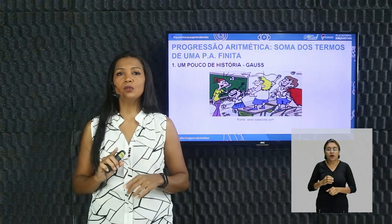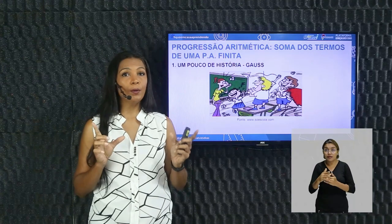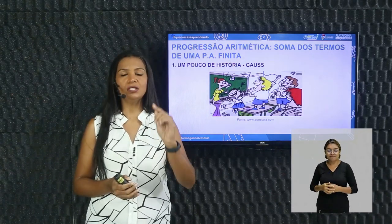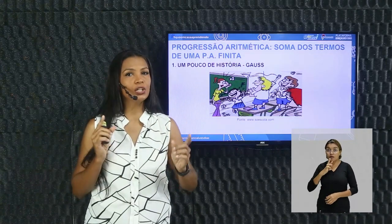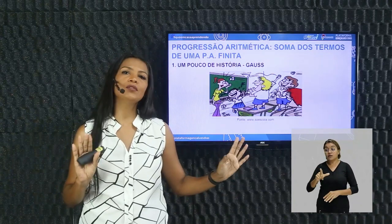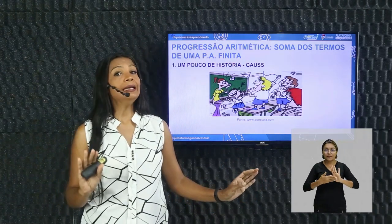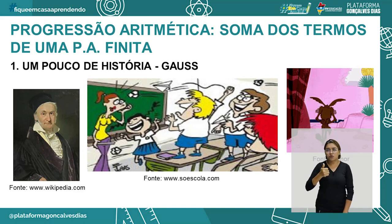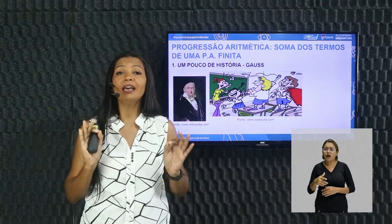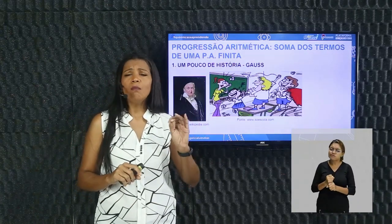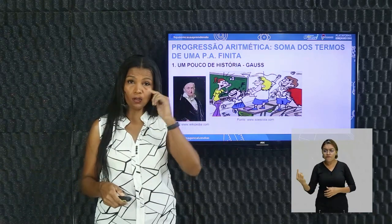O professor disse: se vocês conseguirem dizer qual é a resposta da soma de todos os números de 1 a 100, podem continuar na brincadeira; caso contrário, têm que fazer silêncio. Lá naquela sala havia um jovem de 10, 11 anos — o famoso Gauss, matemático alemão. Gauss sentou, começou a observar a sequência de números e, com menos de 10 minutos, foi até o professor e disse: eu sei a resposta, eu descobri o resultado.